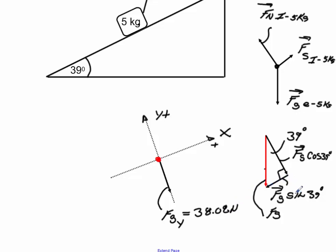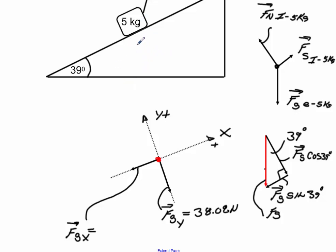We're going to go ahead and show the force of gravity times the sine of 39, and I'm going to call that the force of gravity in the x. That is going to be 5 kg × 9.8 m/s² — if you haven't studied acceleration of gravity yet, you can call it 9.8 Newtons per kilogram. I take 5 × 9.8 × sine of 39 degrees, and that gives me a value of 30.84 Newtons.